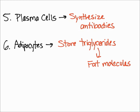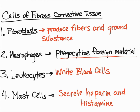You may have noticed that a lot of these cells have to do with your immune system — actually, half of them. Plasma cells synthesize antibodies, leukocytes (white blood cells) help with immune function, and macrophages defend against foreign material. So half of the six cell types in fibrous connective tissue are related to immune system function. That pretty much sums it up for the cells that make up fibrous connective tissue.